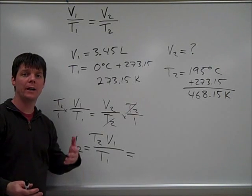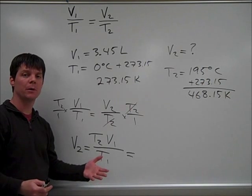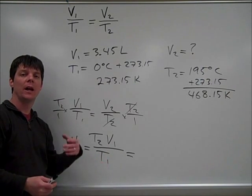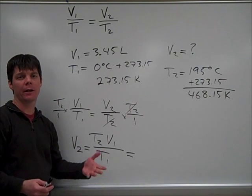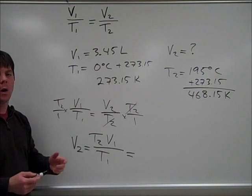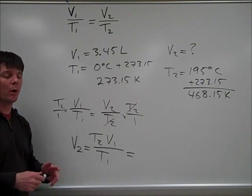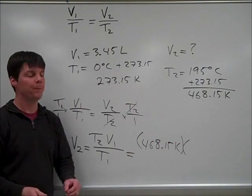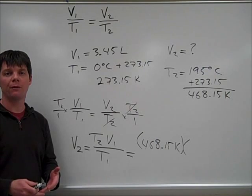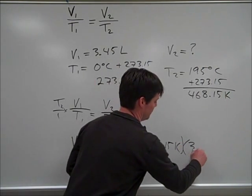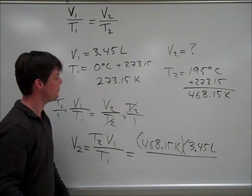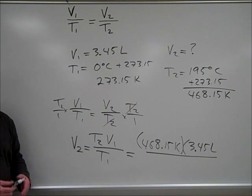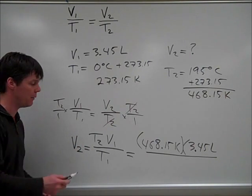My last step is to go ahead and add in my known variables into my solved equation and then solve with my calculator and then evaluate my final answer. We found earlier that T2 was 468.15 Kelvin, V1 was 3.45 liters, and then our starting temperature was 273.15 Kelvin.